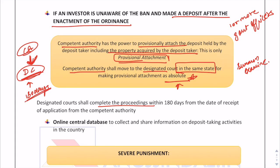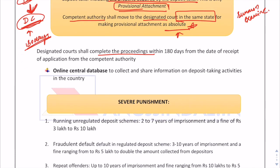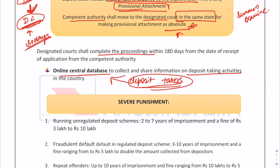Another provision is an online central database. The bill provides for the central government to designate an authority to create an online central database for information on deposit-taking activities and deposit takers. Deposit takers are required to inform the database authority about their business, and the competent authority must also share all information on unregulated deposits with this authority.